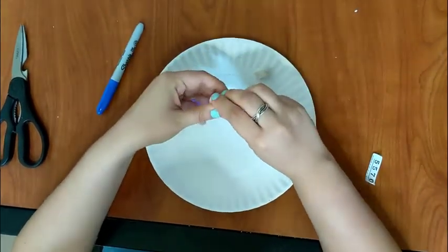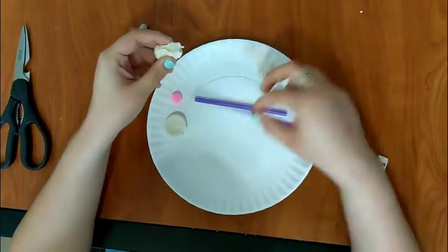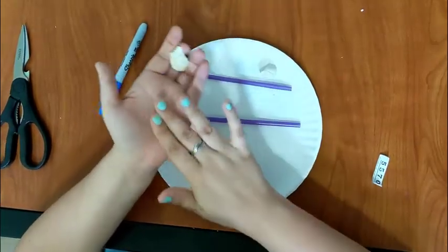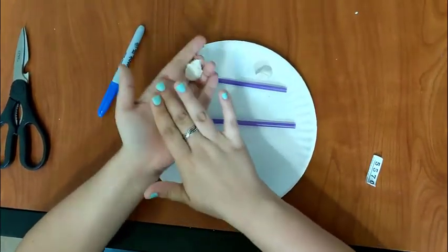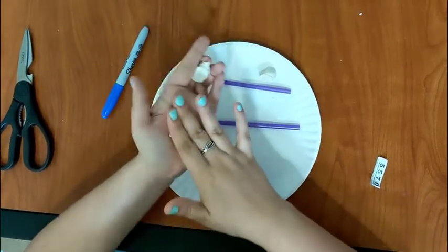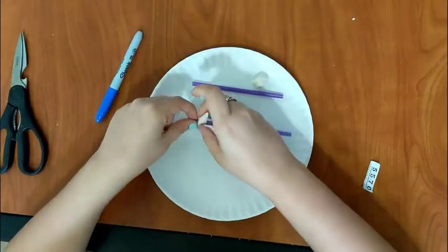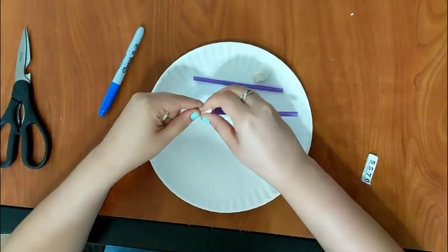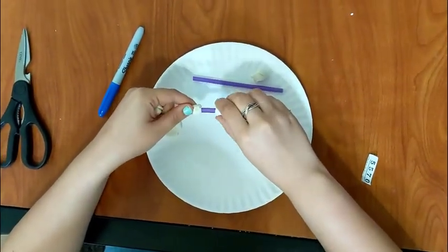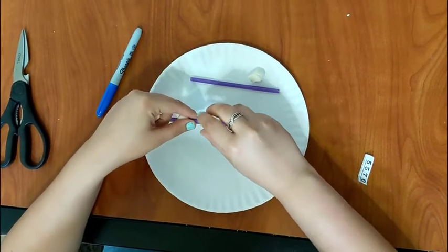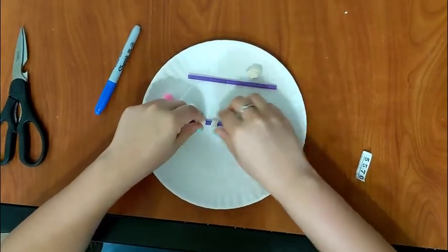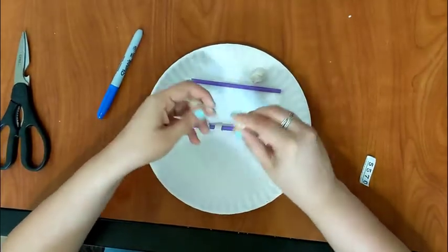Then we're going to take this other half that we made and one of the straw halves and start making our myelin sheath. So this straw is going to act as our axon, and we're going to myelinate it or insulate it with clay as our axon on the paper plate.